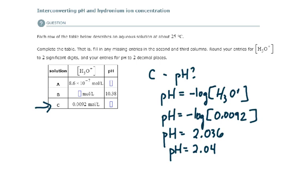Remember that when determining pH, the concentration of hydronium ions must be in moles per liter. Also remember that for pH values, significant digits only count for the digits to the right of the decimal place.